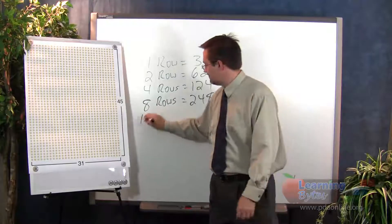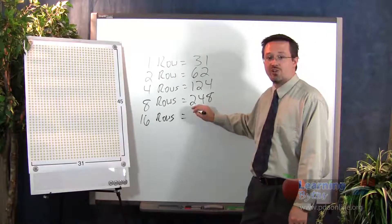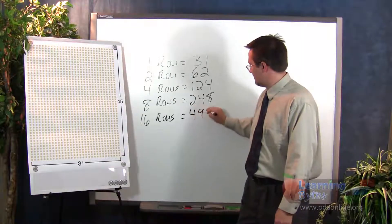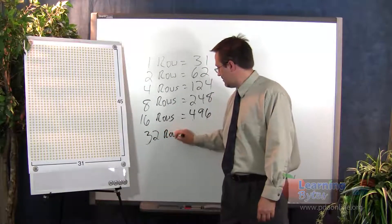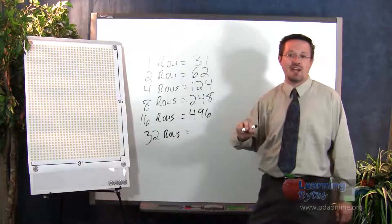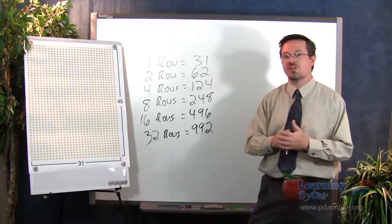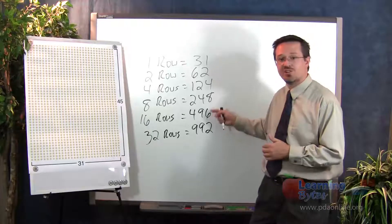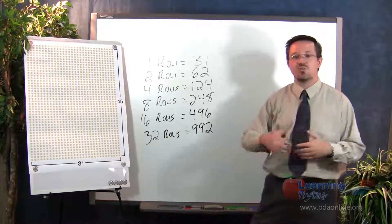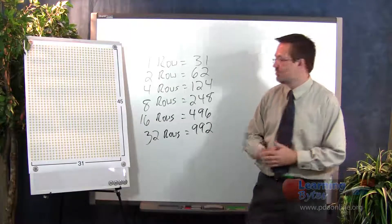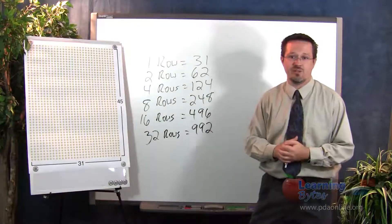16 rows would have 496 students in it. And lastly, 32 rows would have 992 students. So as students are working through this, they're getting an opportunity to practice their addition of multi-digit numbers. We're going to stop at 32 because we don't have 64 rows of students. We only had 45 rows of students. So 64 is not going to give us any useful information.